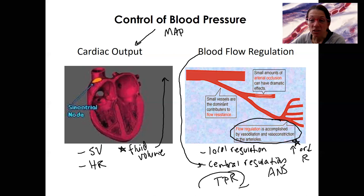You already know vessel size matters. And if you have occlusions, right, that's going to be a factor as well. That's not going to be dynamically regulated. So the factors that regulate mean arterial pressure are going to be stroke volume, heart rate, which you already know about, fluid volume, and total peripheral resistance.